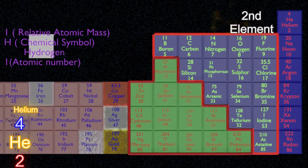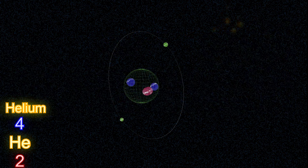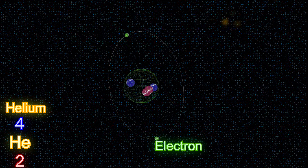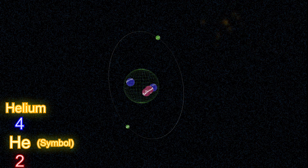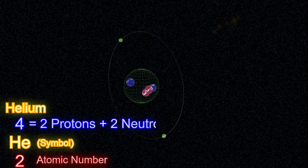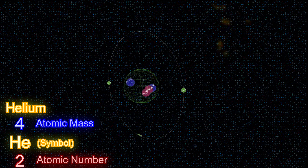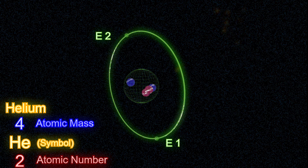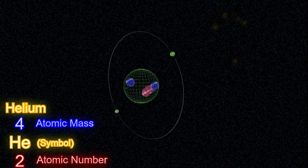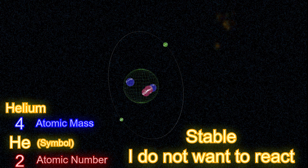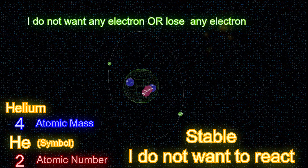Helium is the second element in the periodic table. It has two protons, two neutrons, and two electrons. Two protons means its atomic number is 2. Two protons and two neutrons mean its atomic mass is 4. Both electrons are in the inner, the only shell, and only a maximum of two electrons can be in this shell. This makes helium one of the most stable elements, as it does not need to gain or lose any electron to make its shell complete.